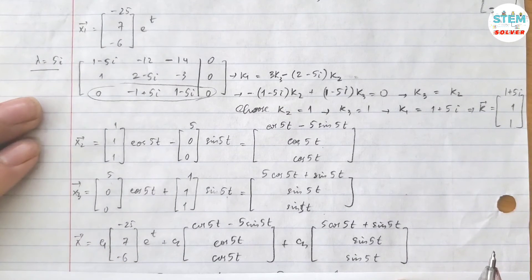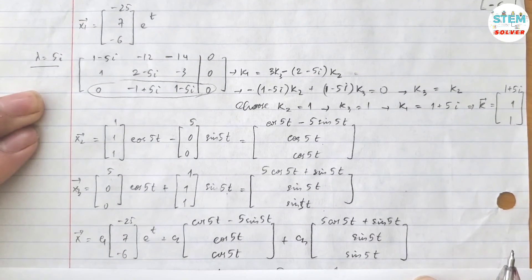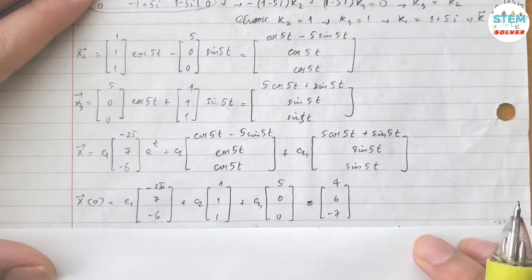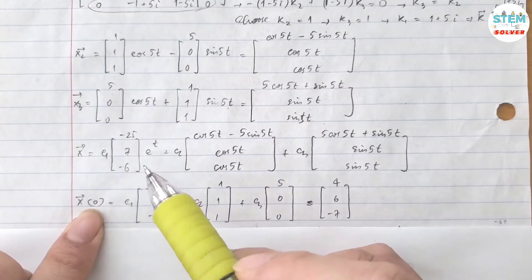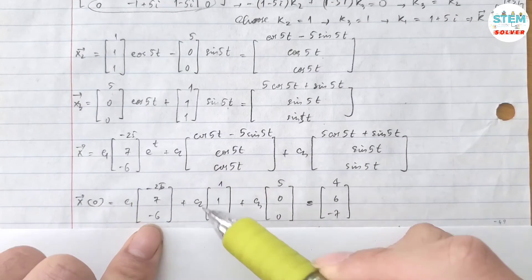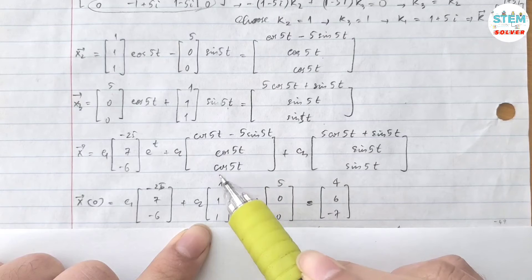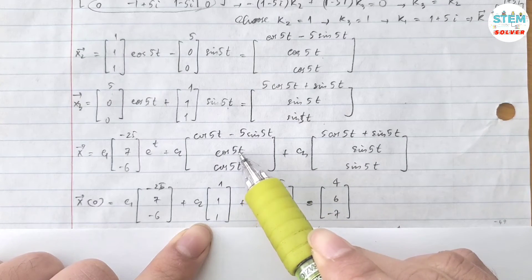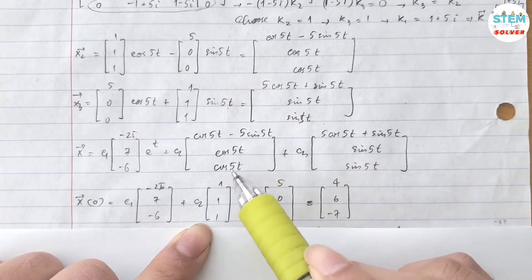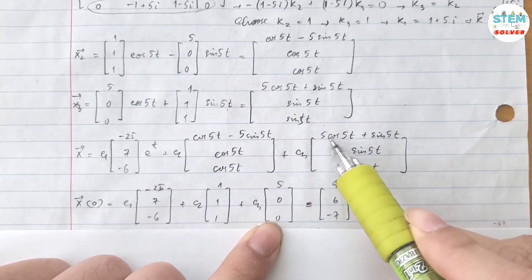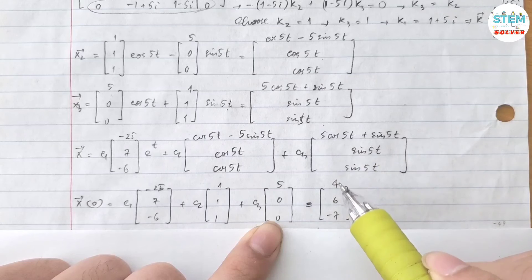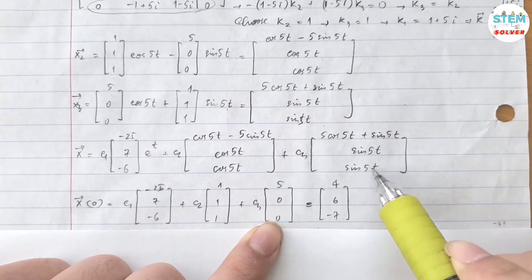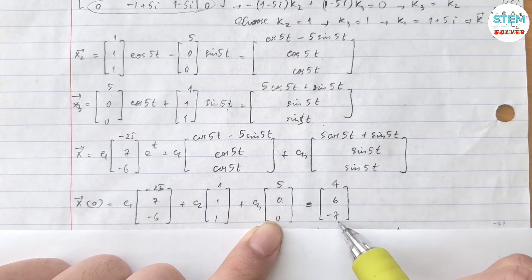Normally you will finish at this step, but because you are given initial value problem, you have to solve for c1, c2, and c3. So plug in zero for t. I have c1 times this vector plus c2 times cos zero, which is one, plus c3 times five cos zero is one, five. And that equals to four, six, seven.